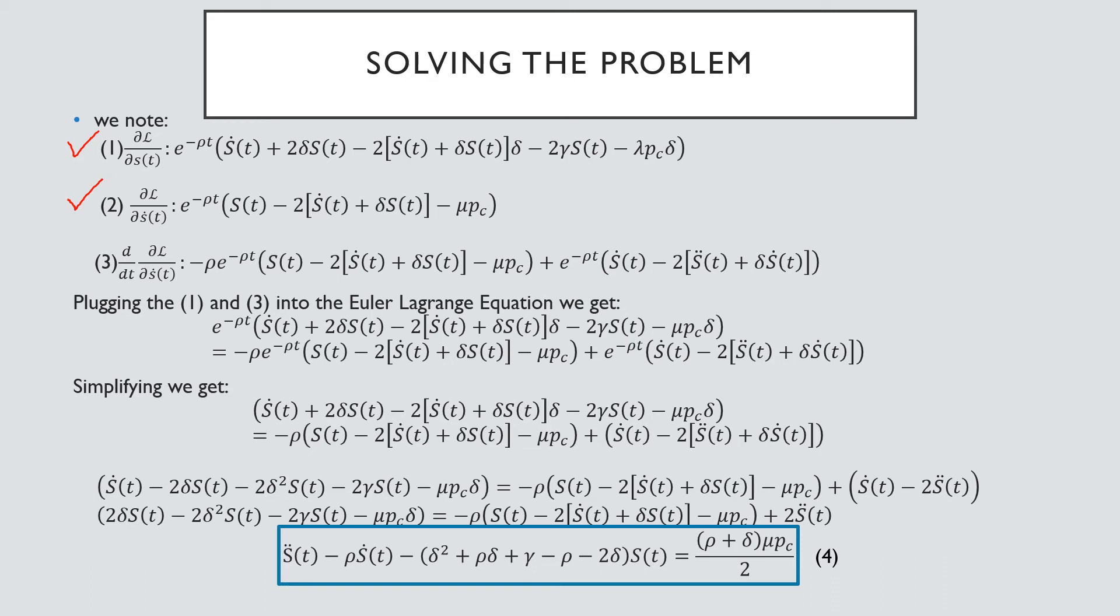And then further differentiate that with respect to time, and then I'm going to plug that in to our Euler-Lagrange equation. If we simplify it and if you follow this math through, we should get a result down here which is equation number four, which is what we are going to use.